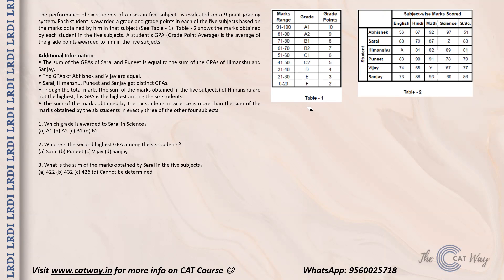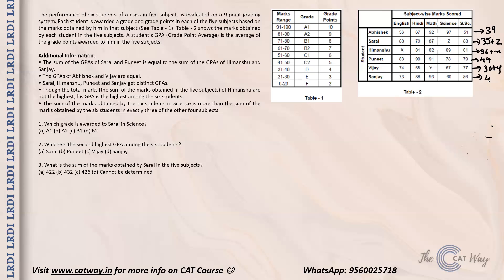For Abhishek, Puneet, and Sanjay we know all the scores, so we can easily calculate their GPA. For example, Abhishek got 56 in English giving six grade points, 67 in Hindi giving seven grade points, and so on. The sum of grade points for Abhishek is 39; for Saral it is 35 plus Z; for Himanshu it is 36 plus X; for Puneet it is 44; for Vijay it is 30 plus Y; and for Sanjay it is 40.